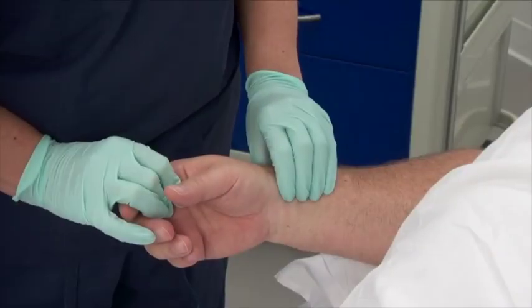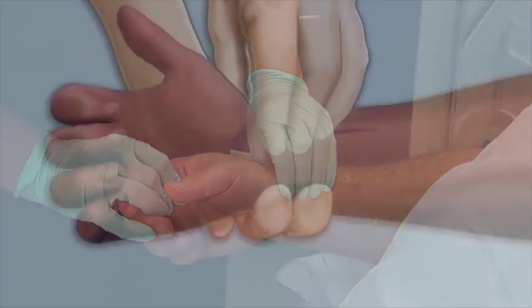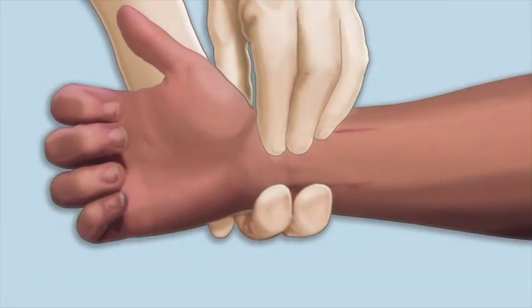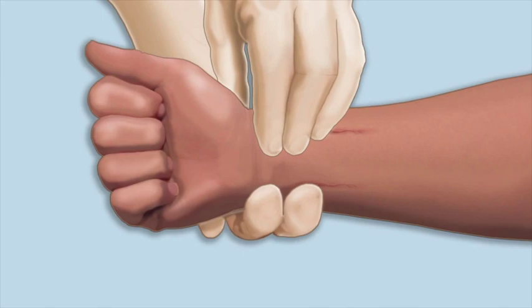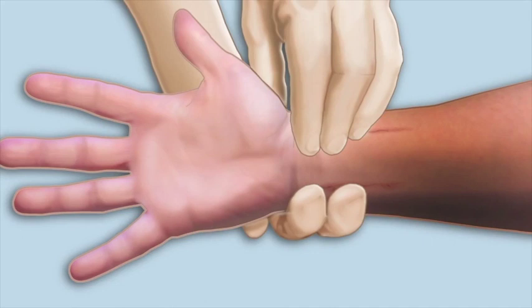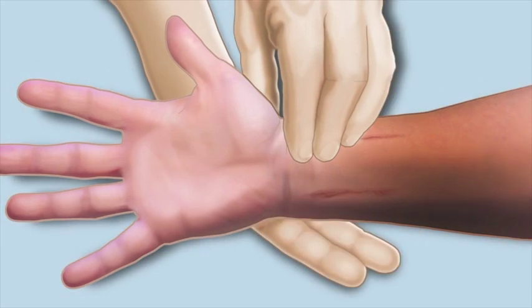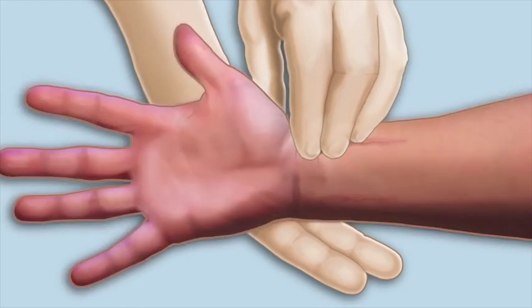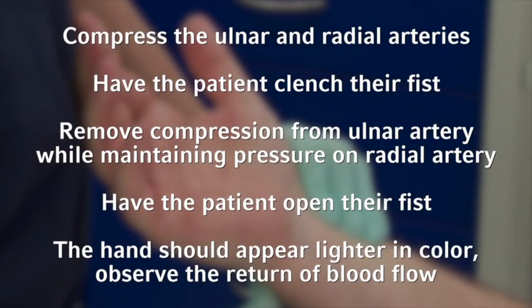Prior to a radial arterial catheter insertion, an Allen's test is performed to confirm adequate collateral circulation. An Allen's test is performed by compressing both the ulnar and radial arteries. Begin by having the patient clench their fist for 30 seconds. Next, have the patient unclench their fist while still compressing the ulnar and radial artery. The patient's hands should appear blanched. Compression is removed for the ulnar artery while maintaining pressure on the radial artery. Look to observe a return of blood flow within 10 seconds. The return of blood flow demonstrates a positive Allen's test and indicates that the site is acceptable for radial artery catheter insertion.